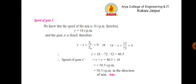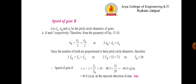We need to find the speed of gear c. The speed of the arm is 18 rpm anti-clockwise, so according to the table y equals 18. Gear a is fixed, so the speed of gear a from the table is y minus x multiplied by tc by ta, which must equal zero. By solving this we find the values of x and y. Then the speed of gear c according to the table is x plus y, giving 58.5 rpm anti-clockwise.